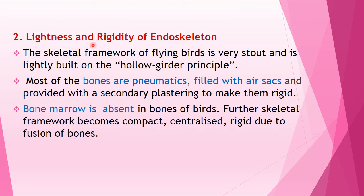The second anatomical adaptation is lightness and rigidity of the endoskeleton. The skeletal framework of flying birds is very stout and lightly built on the hollow girder principle. Most bones are pneumatic bones filled with air and are provided with secondary plastering to make them rigid. Bone marrow is completely absent. The skeletal framework becomes compact, centralised, and rigid due to fusion of bones. The presence of pneumatic bones, absence of bone marrow, and fusion of bones together give greater rigidity to the skeletal system, favouring flight.